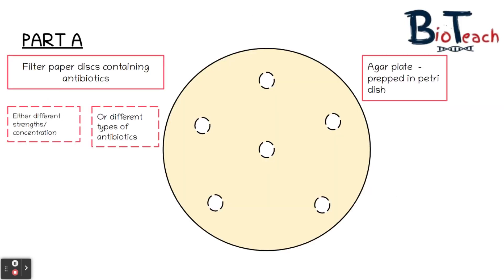The idea for Part A is to prepare a lawn culture — something that might look a little bit like this diagram of a petri dish — with filter paper discs containing antibiotics. You might wet the filter paper discs with a range of chemicals or use different concentrations of the same chemical, and you will use the aseptic technique to prepare a bacterial lawn culture. You'll place the filter paper or antibiotic discs on the lawn culture and then incubate those plates, and in the end what you'll measure is a zone of inhibition — a clear zone where the bacteria around the disc may or may not have grown.